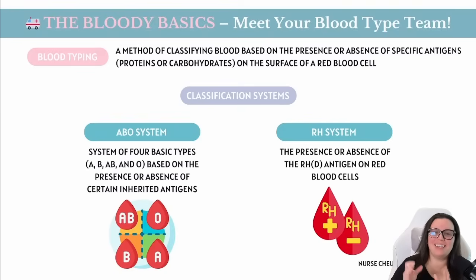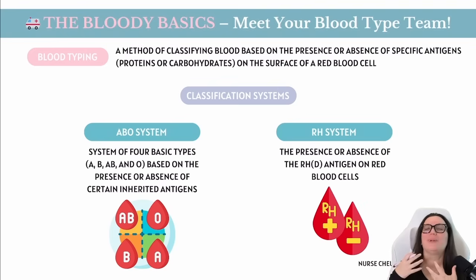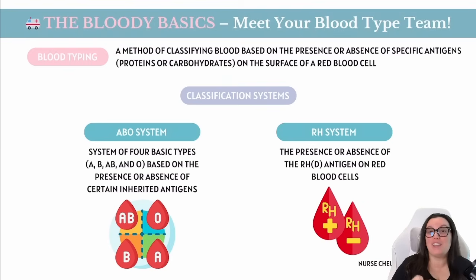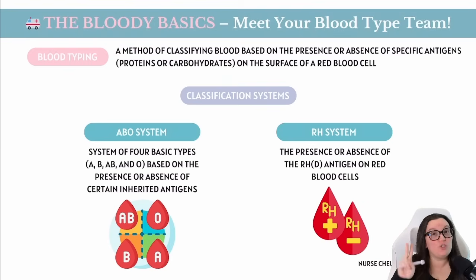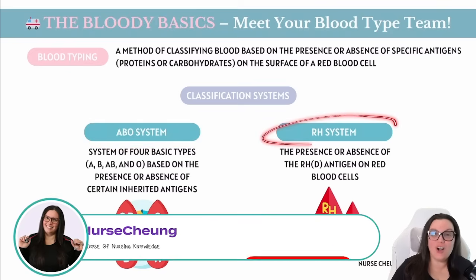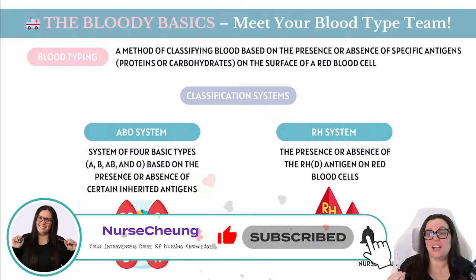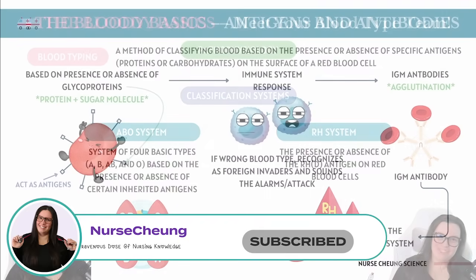Let's talk about blood typing. Your blood isn't just this red goo — it's packed with personality, and everybody has a very unique blood ID card made up of two big systems: your ABO system and your RH system. You can think of these as your blood's first and last name.